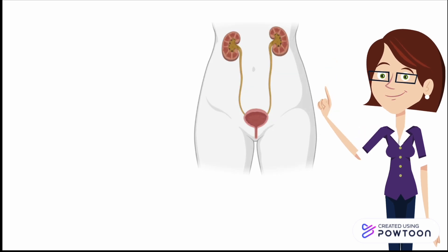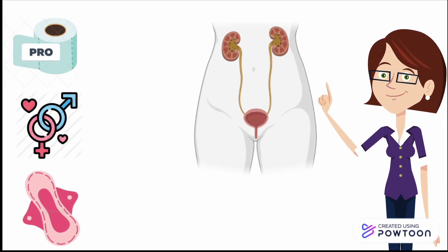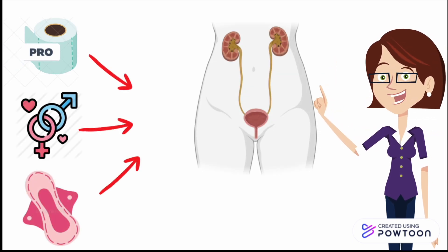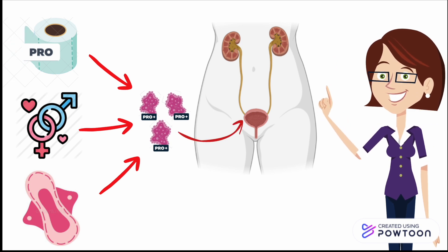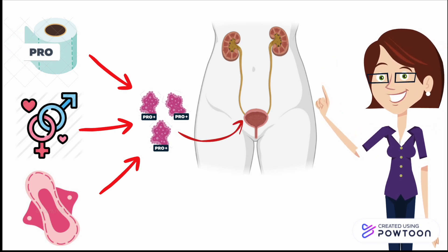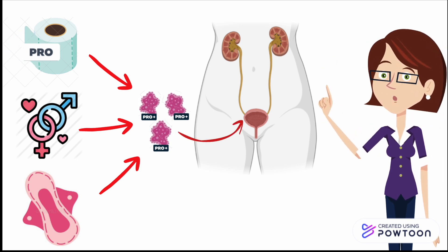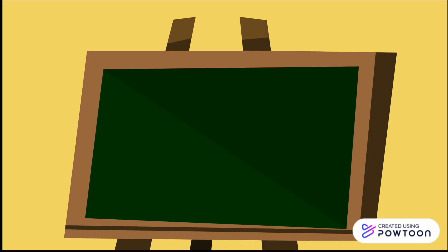Improper wiping, sexual intercourse, and unhygienic sanitary products can give rise to bacteria such as E. coli. This bacteria then enters the urinary tract through the urethra, starting a UTI. The bacteria travels through the urinary tract causing infections along the way.